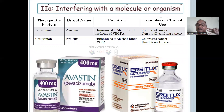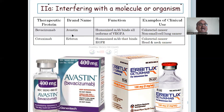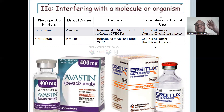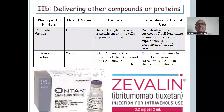Subclass 2A — interfering with the molecular organism. Examples: Bevacizumab (brand name Avastin) and Cetuximab (brand name Erbitux). Bevacizumab is a humanized monoclonal antibody; Cetuximab is a humanized antibody that binds with EGFR. Used for colorectal cancer — a biggest problem in India — and head and neck cancer.